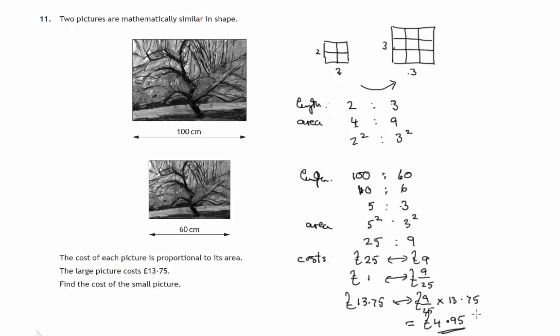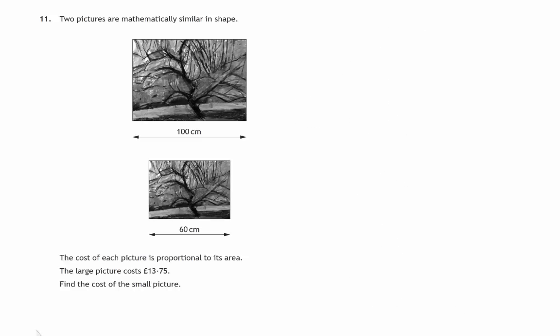That's one method of doing it, just with these ratios. Now another method is to use scale factors. The length scale factor, now this is from large to small, would be, because it's a reduction, small number over large number, 60 over 100, which would be six tenths or three fifths.